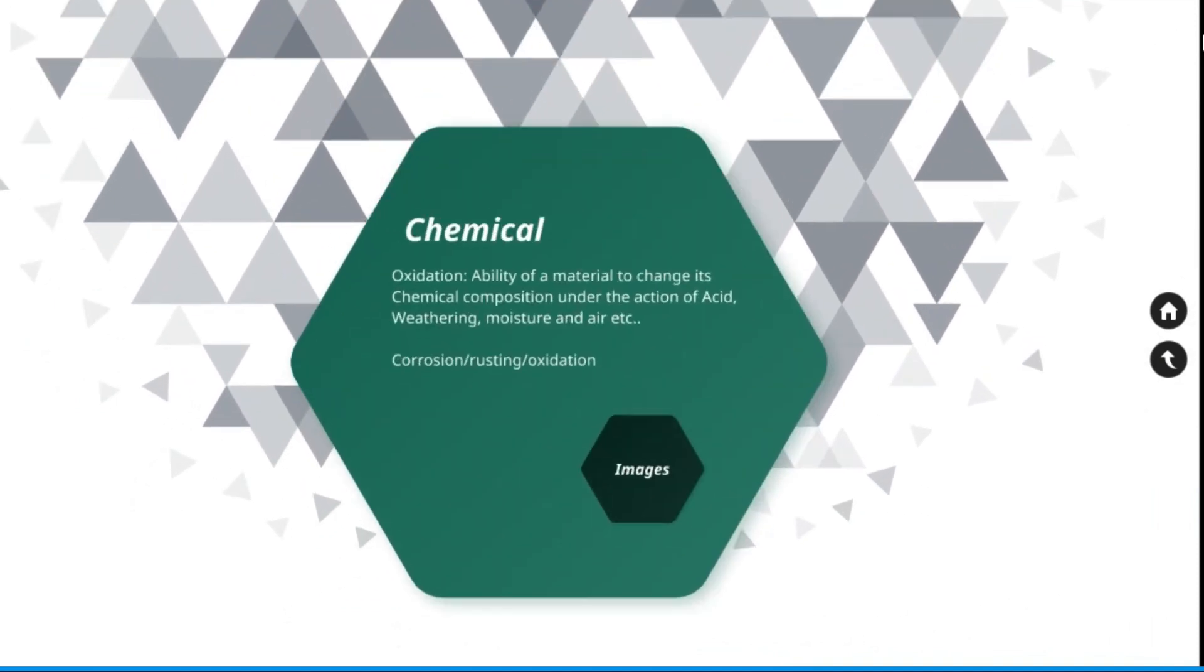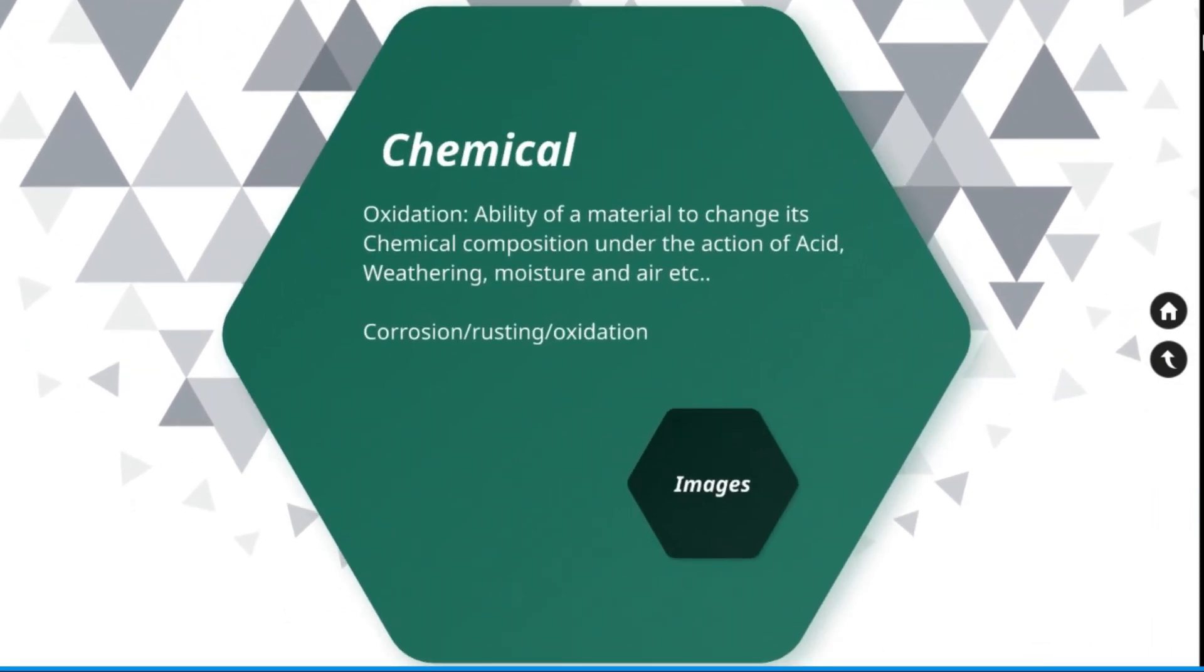Chemical properties of material. Ability of a material to change its chemical composition under the action of acid, weather, moisture, or air can be considered as a chemical property change. For example, when a material burned and turned into a different material of a composition, the burning is considered as a chemical property. That defines how easily a substance combines chemically with other substances. Corrosion, rusting, oxidation all can be considered as a chemical property change.